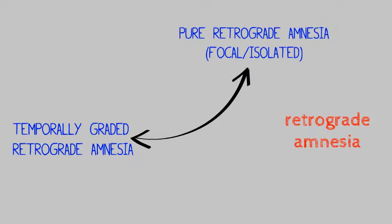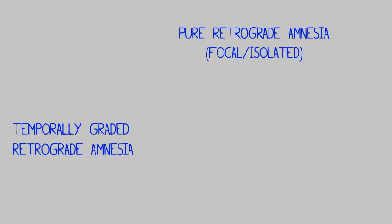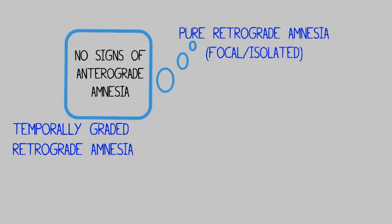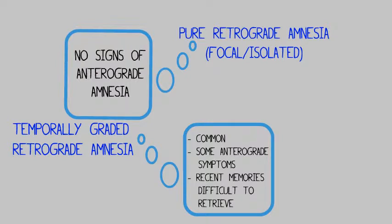Retrograde amnesia splits up into two categories: pure retrograde amnesia and temporally graded retrograde amnesia. Pure amnesia usually shows no signs of anterograde amnesia. Temporally graded amnesia is the more common of the two and shows some of the symptoms found in anterograde amnesia. For example, the victim may find difficulty in retrieving recent memories. This seems to be the type that the movie focuses on.